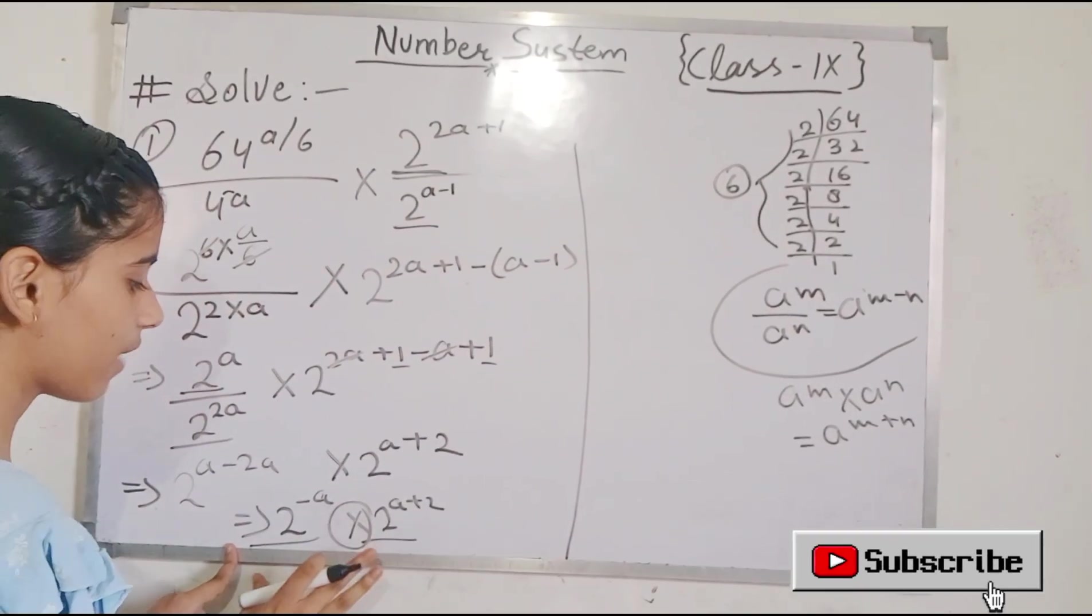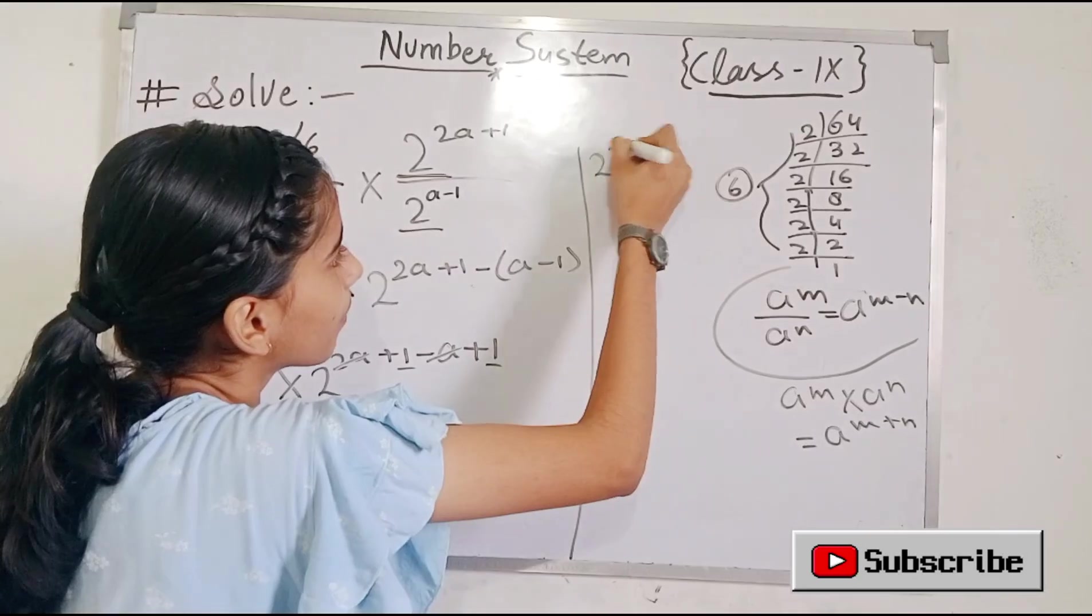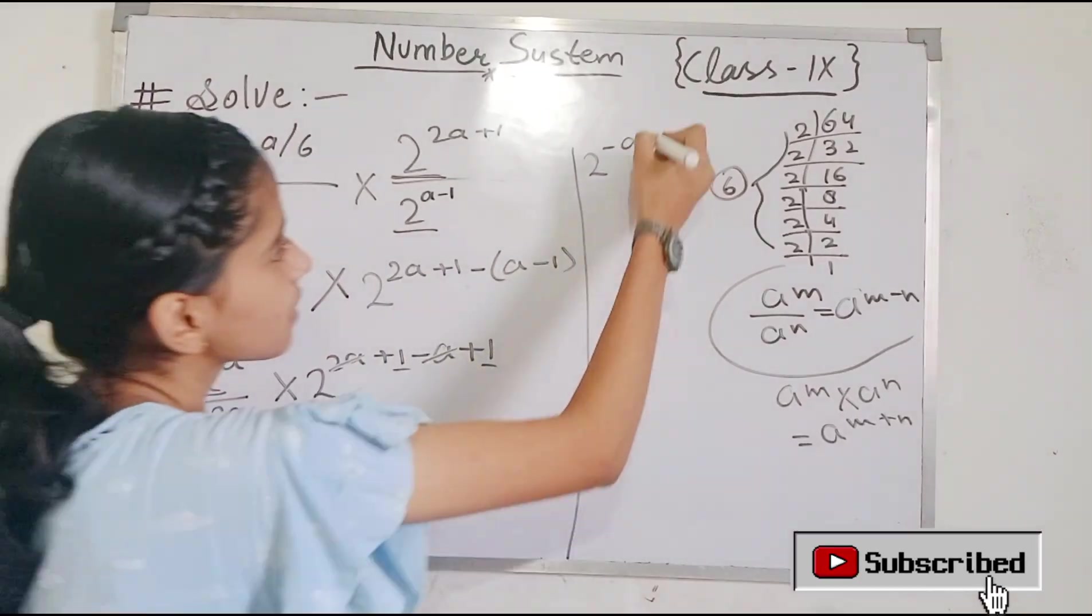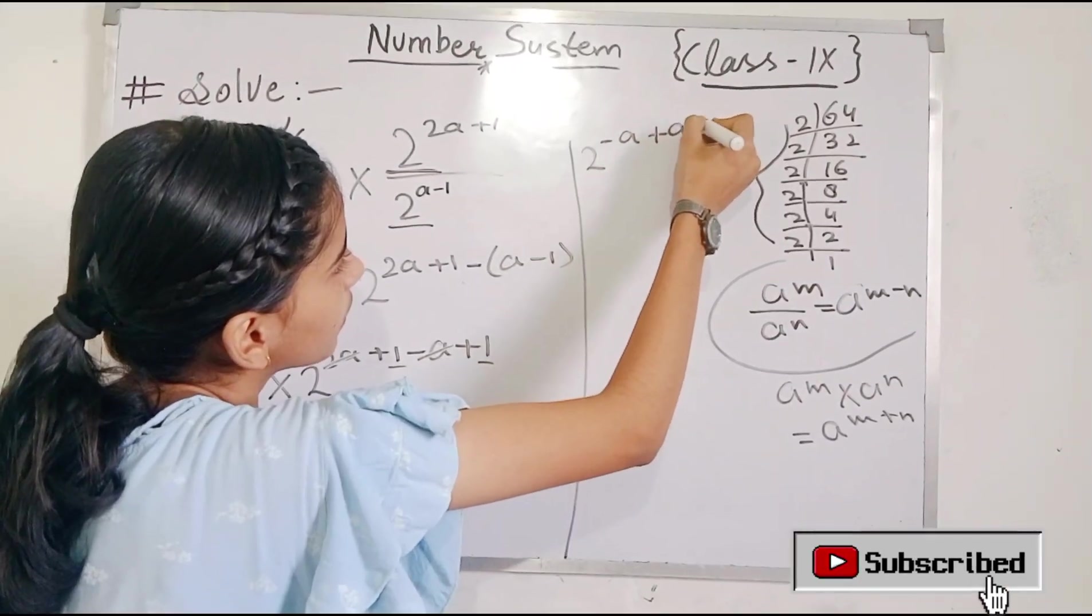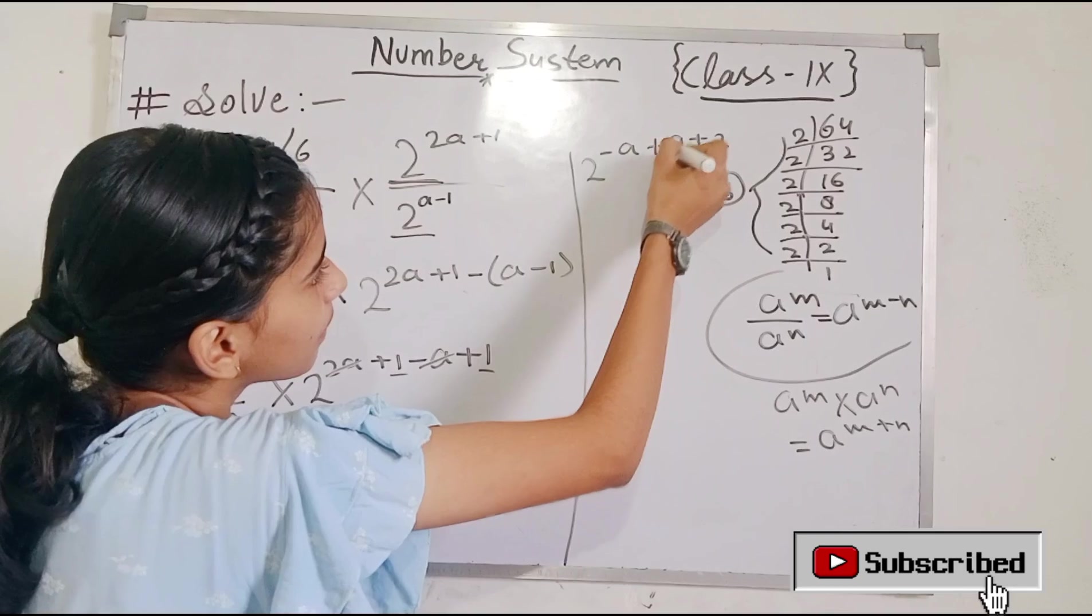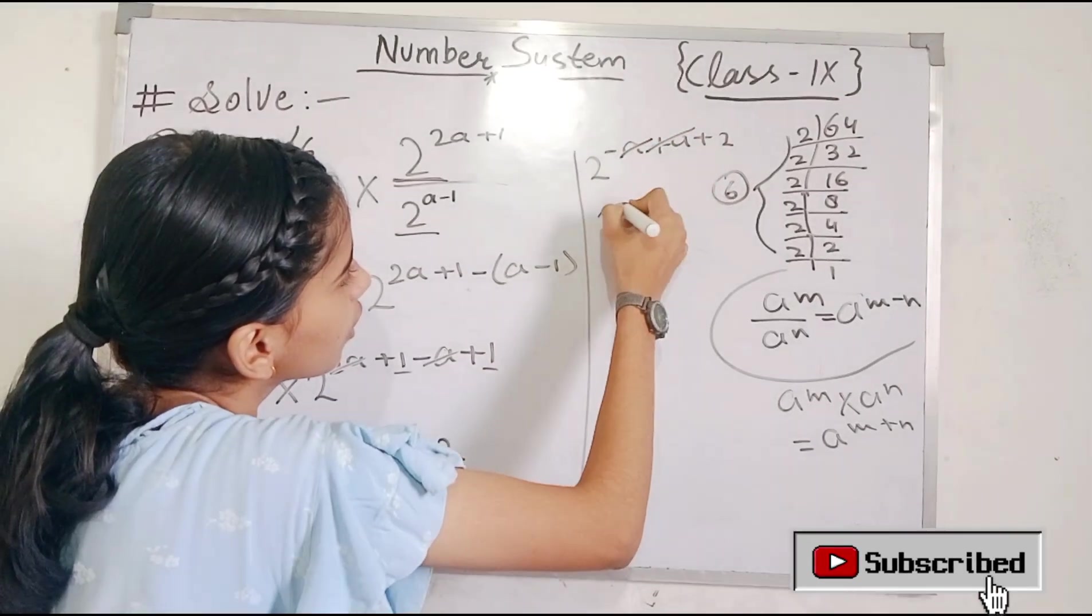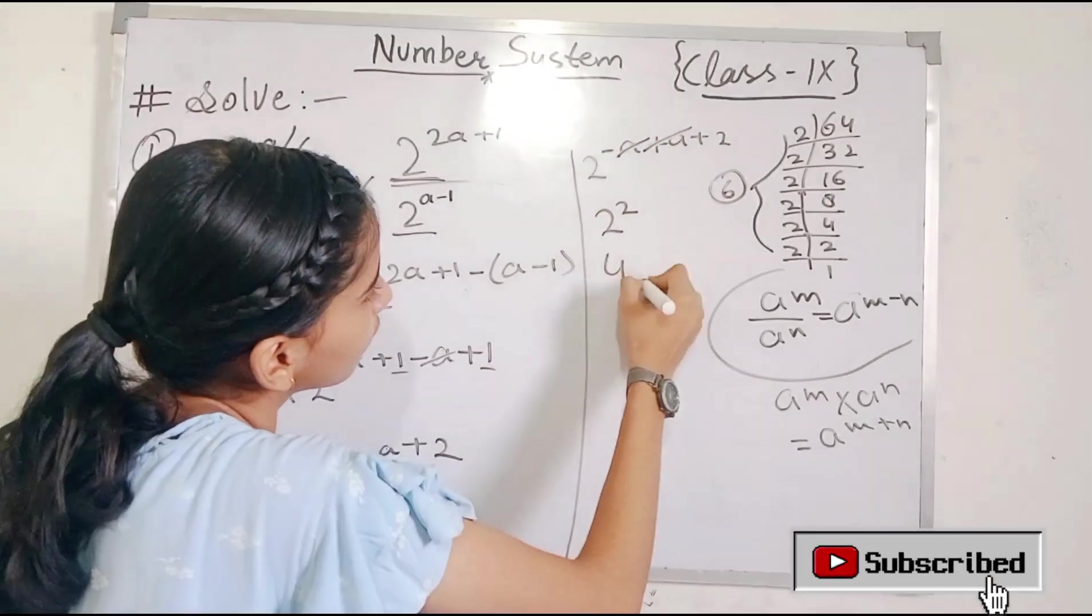Base is the same but the power is different. So 2 minus a plus a plus 2. Minus a plus a cancel out. We have 2 squared. 2 squared is 4.